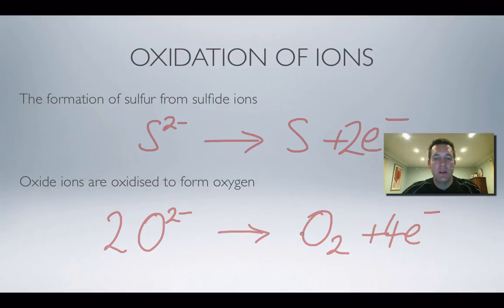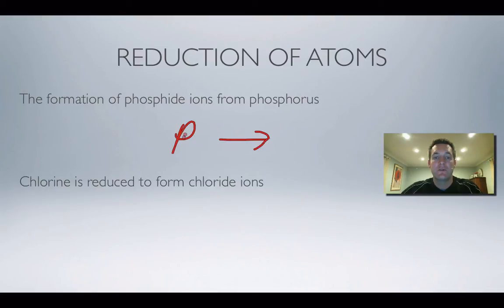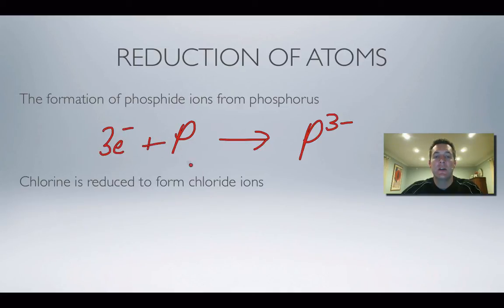Moving on to reduction — we'd expect to see electrons on the left because atoms are gaining electrons. For phosphorus forming a phosphide ion: phosphorus is in group five, so the phosphide ion has a 3− charge. One phosphorus atom on each side so the atoms balance. We add electrons to the left-hand side, which is the more positive side, and we need three electrons to balance the 3− charge.